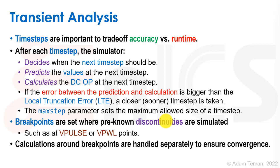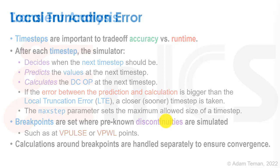Breakpoints are set where pre-known discontinuities are simulated. Instead of guessing where a time step should be, we know that when we have a V-pulse making a change from 0 to 1, there's probably going to be a lot of action in our circuit. Right around where the discontinuity is, we're going to put a lot of breakpoints, which are automatically time steps. It eases our decision and convergence. Calculations around breakpoints are handled separately to ensure convergence.